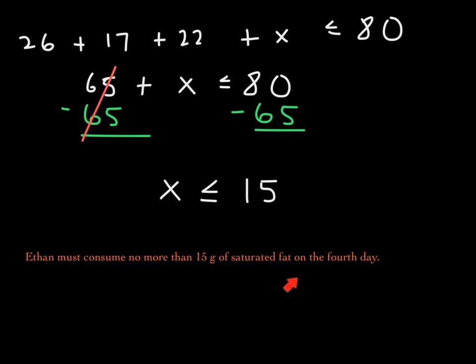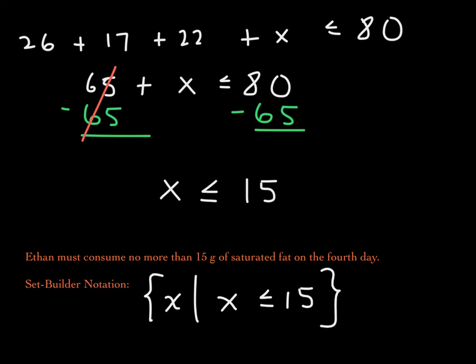You can also express all of this in set builder notation. In set builder notation, it's written as: the set of all X such that X is less than or equal to 15. Don't forget X represents the maximum number of grams of saturated fat he can have on the fourth day. That's called set builder notation.